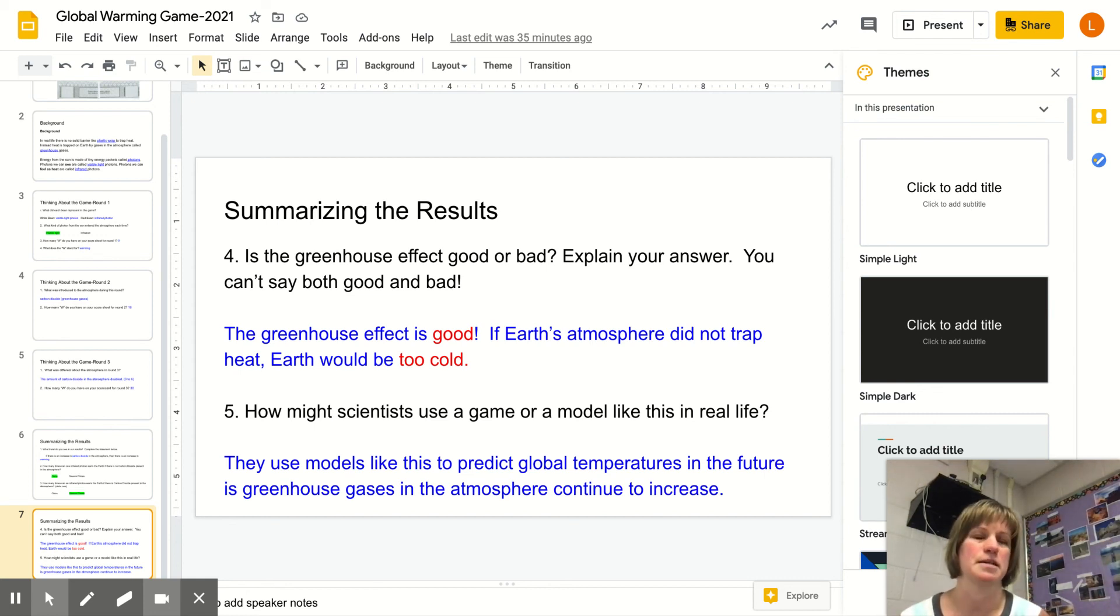What about this? Is round one okay? No, too cold of a planet. When we get to round three, that's when scientists call it global warming, or sometimes climate change, and that's the environmental issue. It's not an issue to have some greenhouse gases in our atmosphere—that is a good thing. It's an issue when they're out of control. That's an important distinction to make.